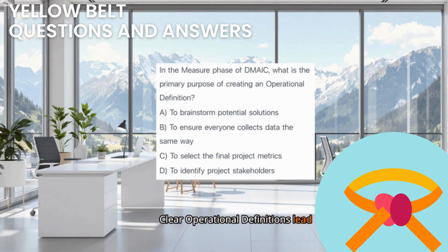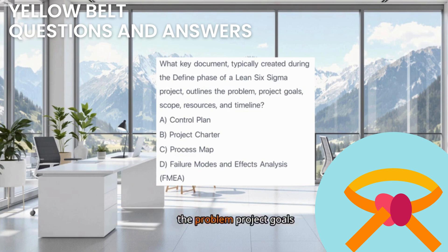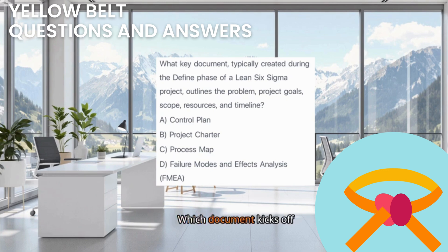Clear operational definitions lead to trustworthy data. What key document, typically created during the Define phase of a Lean Six Sigma project, outlines the problem, project goals, scope, resources, and timeline? A. Control Plan. B. Project Charter. C. Process Map. D. Failure Modes and Effects Analysis (FMEA). Which document kicks off the project formally?